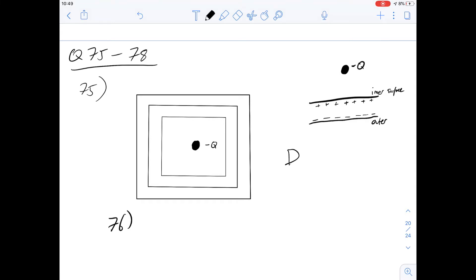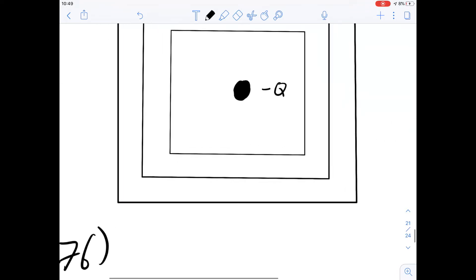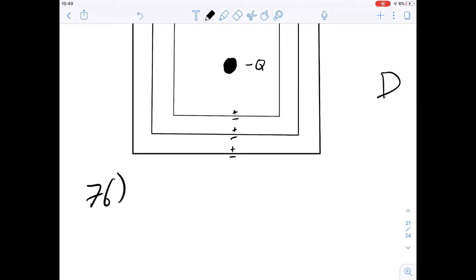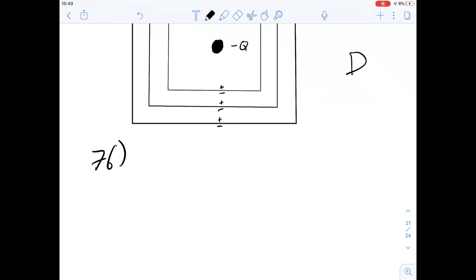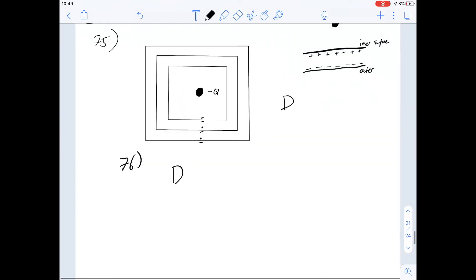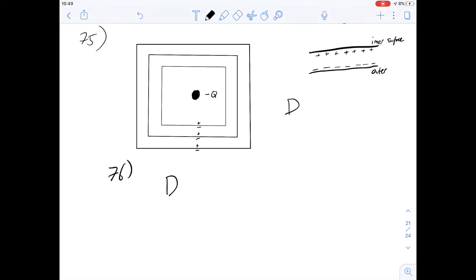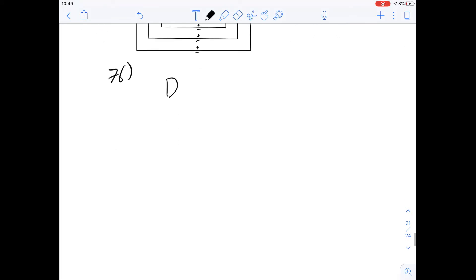76 says, induced charge on the outer surface of the largest cylinder is what? Okay, well, this is where we can zoom in and have a look at what all the charges are doing. So as we said, there's going to be a positive charge on this side of the inner cylinder and negative one on this side, and again on the next one, and again on the next one. So on the outer surface of the largest cylinder, we're going to have a charge that's equal to negative Q again. And that in this case, again gives us an answer of D. So that's unit 24 dealt with.